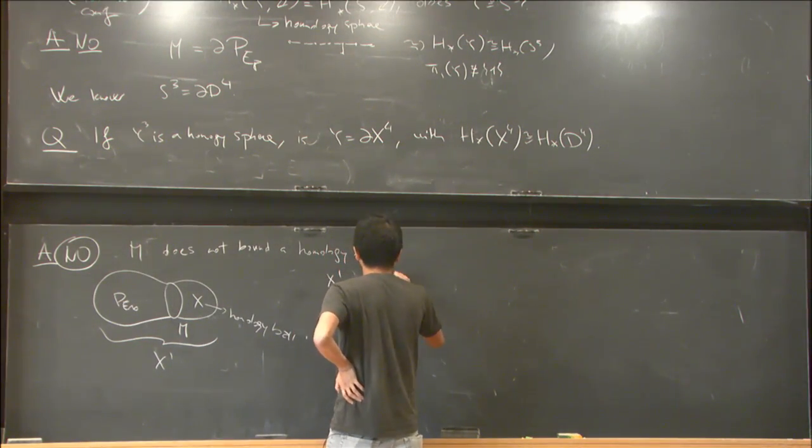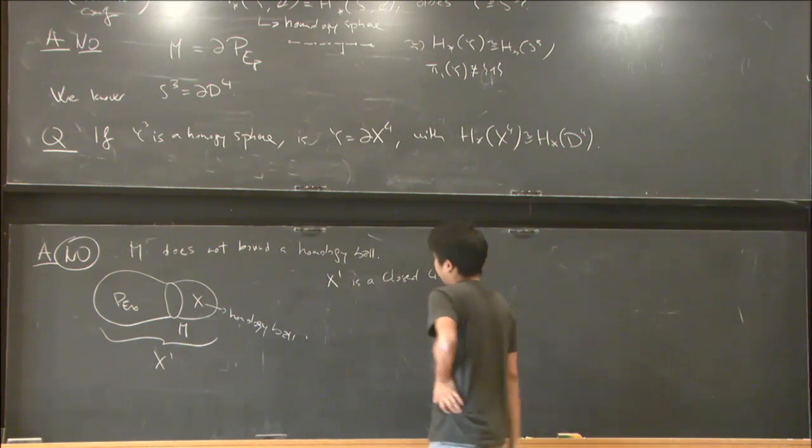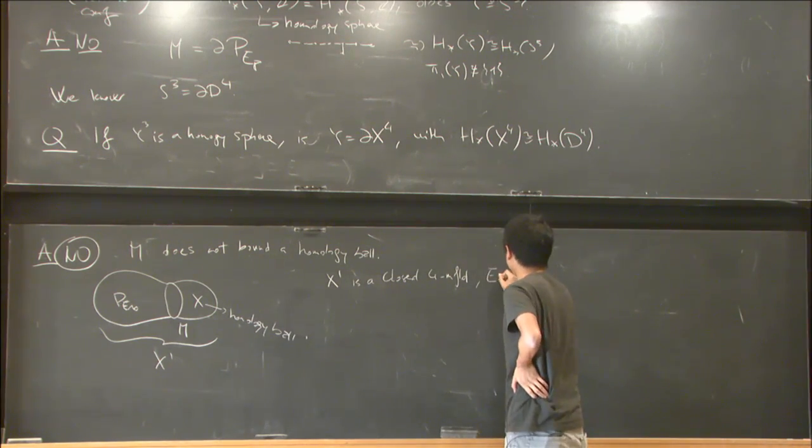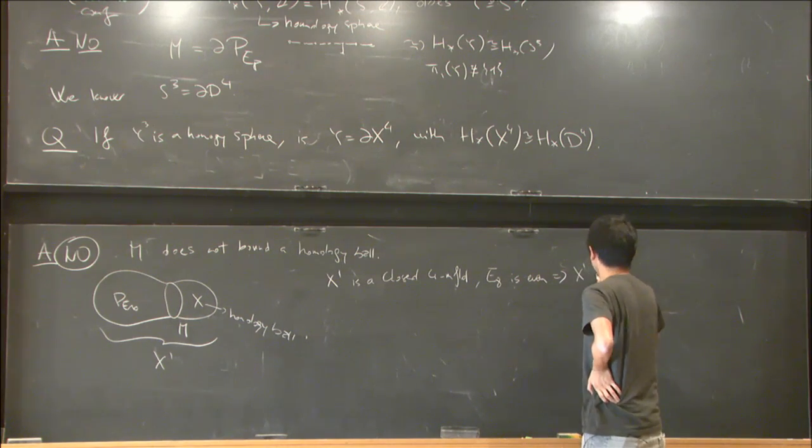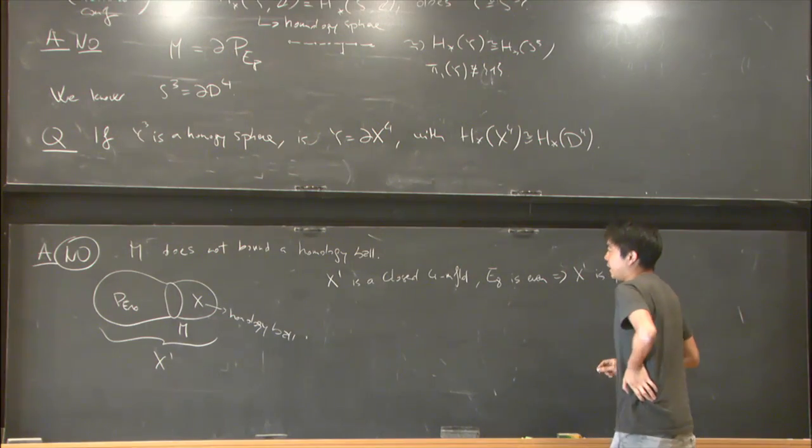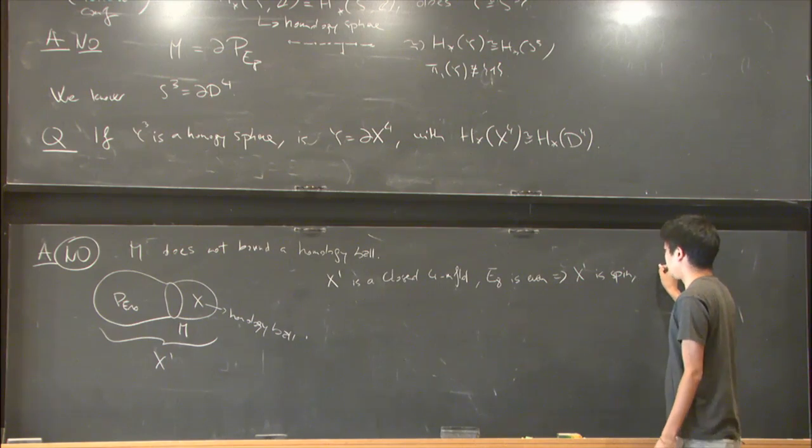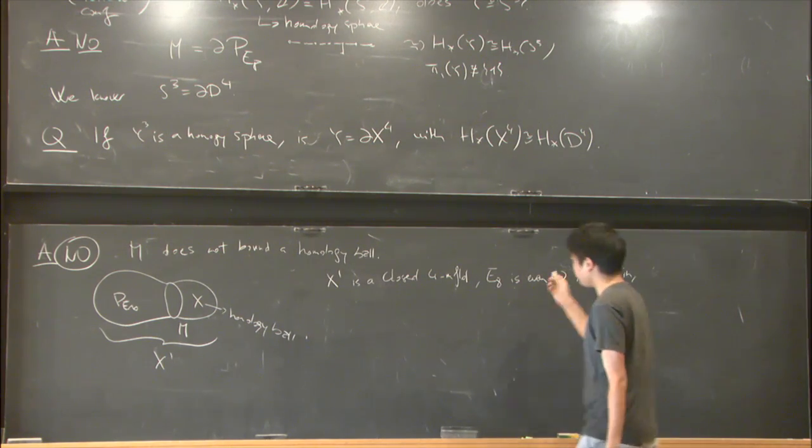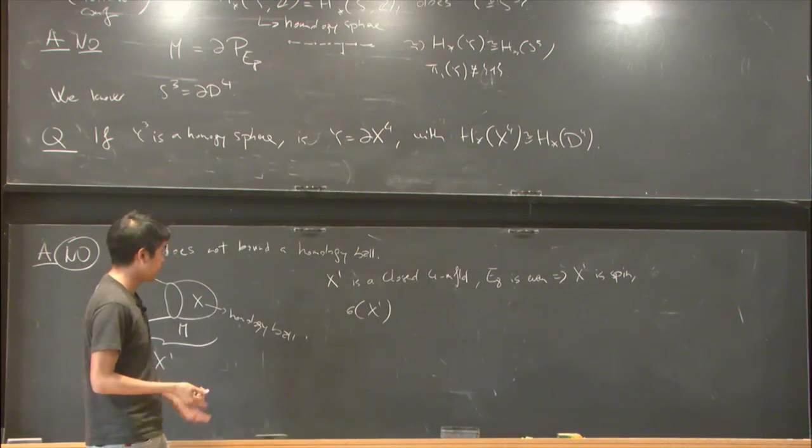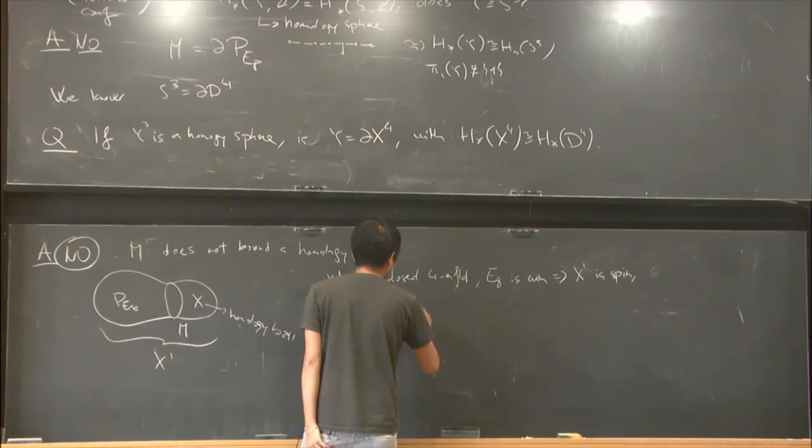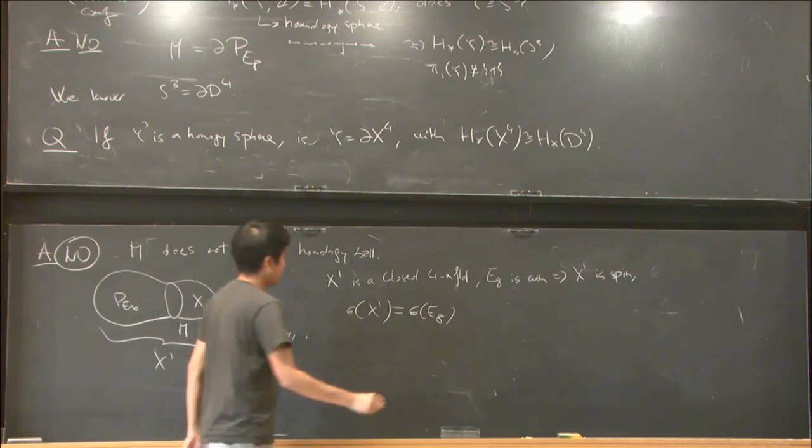The fact that E8 is an even lattice implies that X' is spin. The lattice has signature that is definite and has rank 8. The signature of X' is the same as the signature of E8 because I'm adding a piece which doesn't have any homology, which is 8 or minus 8 depending on sign convention.